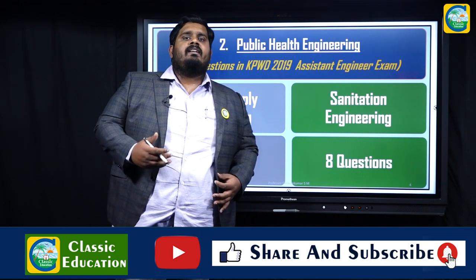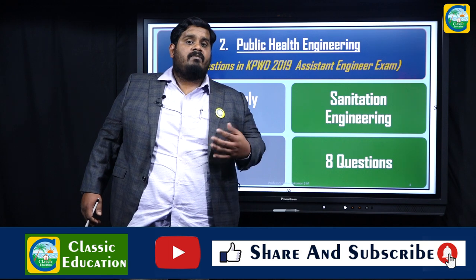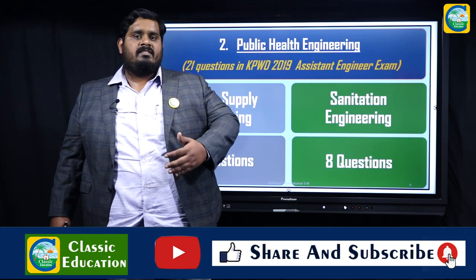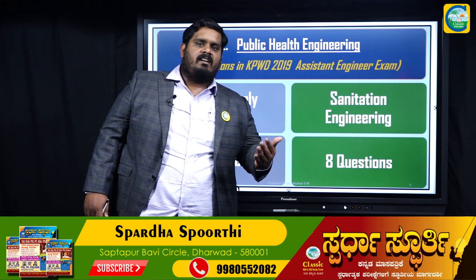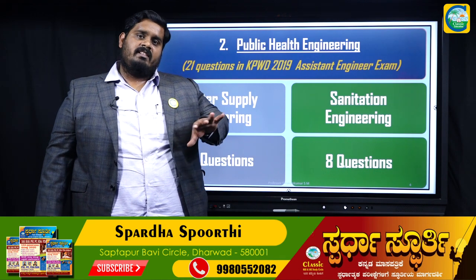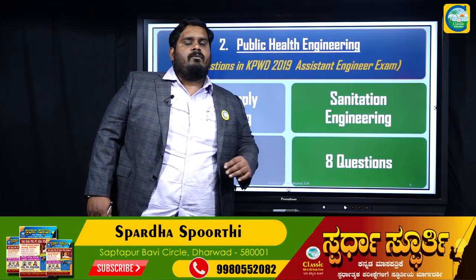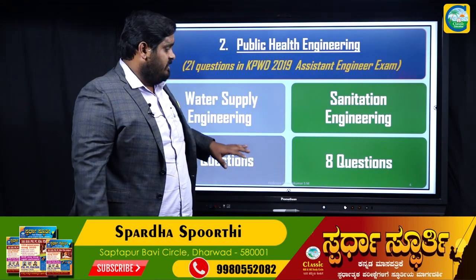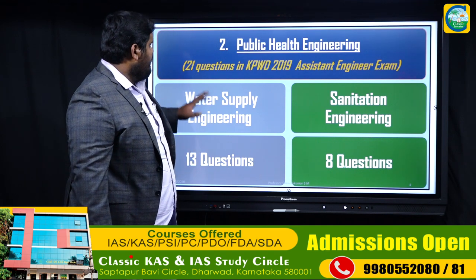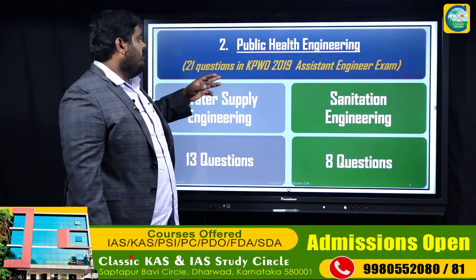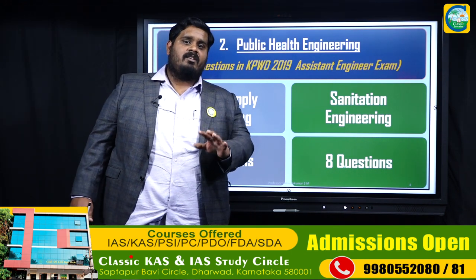Different rivers carry different characteristics. For example, the Kali River gets its black color from the rocks it flows over. It is the only river that flows entirely within Karnataka and drains into the ocean. As a civil engineer, you are supposed to know these aspects. In the 2019 KPWD exam, there were 21 questions on public health engineering alone.